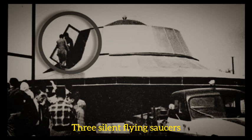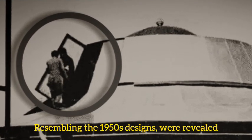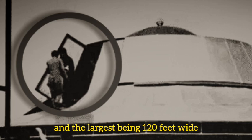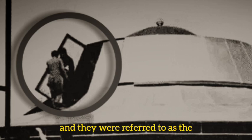Three silent flying saucers resembling the 1950s designs were revealed, with the smallest being 24 feet in diameter and the largest being 120 feet wide, and they were referred to as the Alien Reproduction Vehicles.